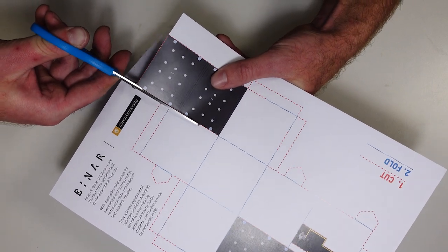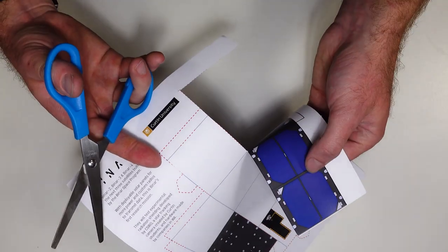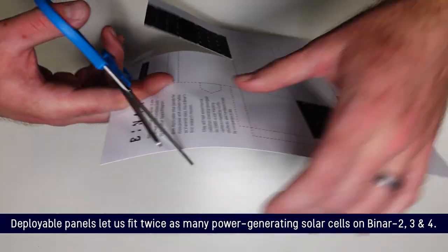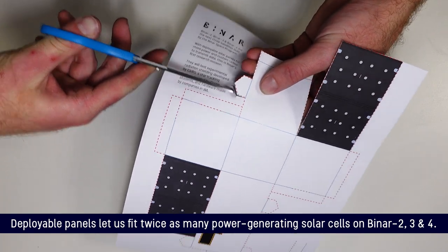All right, so you're going to want to make sure as you're cutting this bit that you cut all the way along here. That's going to let our deployable solar panels fold all the way out. Make sure we leave that little tab there attached and just cut around the edges.